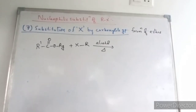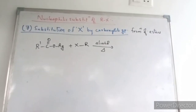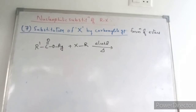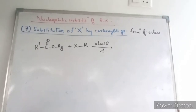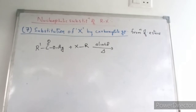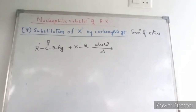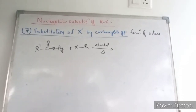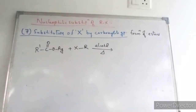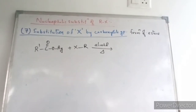Hello everyone. In the last video we have seen nucleophilic substitution reactions of alkyl halides. In that we have seen the substitution of halogen by nitro group, nitrito group, nitrile group, cyanate group, hydroxyl group, etc. So 6 substitutions that we have seen.